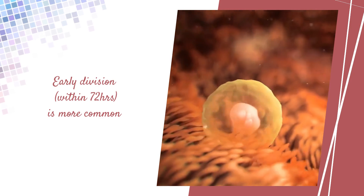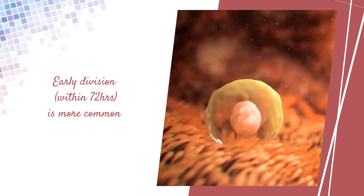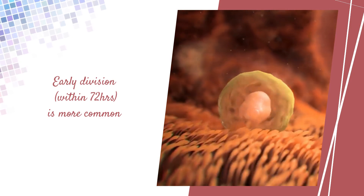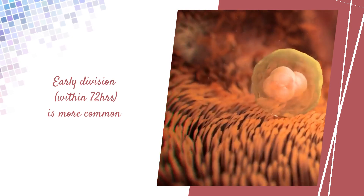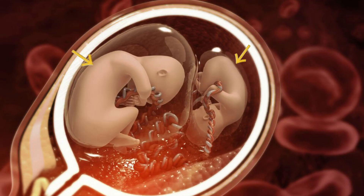If the division occurs within the first 72 hours after fertilization, the twins will have different placentas and separate amniotic sacs, also called dichorionic-diamniotic twins.